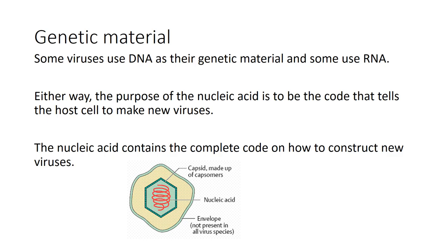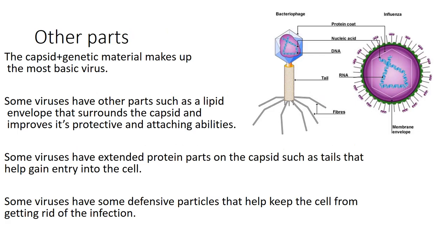The second part of the virion is the genetic material. Some viruses use DNA and some use RNA — two different types of chemicals with the same purpose. The purpose of that nucleic acid is to be the code that tells the host cell to make new viruses. That's the reproduction part that's so important. The nucleic acid contains the complete code on how to construct new viruses, so if we can hijack the cell and get the code in, the code tells it how to make new viruses and the cycle repeats.